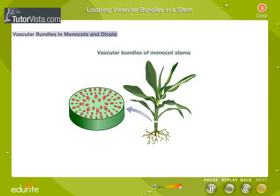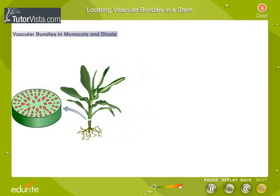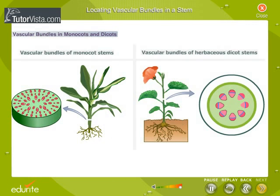The vascular bundles of monocotyledonous stems are scattered throughout the ground parenchyma of the stem. In herbaceous dicotyledonous stems, the vascular bundles are arranged in the form of a ring. The vascular bundles not only act as conducting tissues for the plant, but also help in growth in thickness.